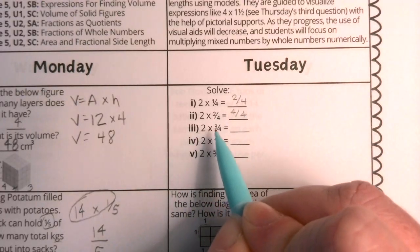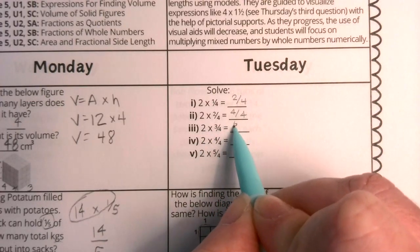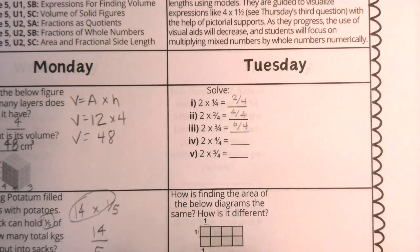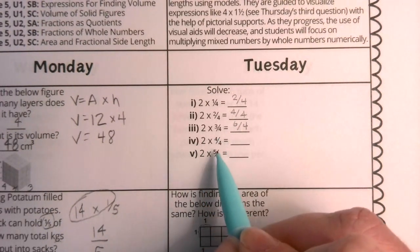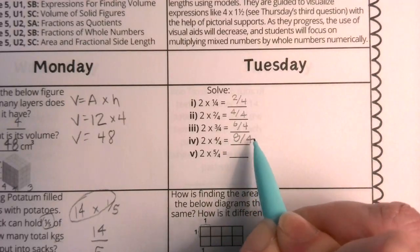Here I have two times three over four, so I'm going to take my two times three equals six, and my four stays my denominator. Two times four over four is two times four, which is eight over four.